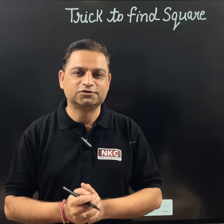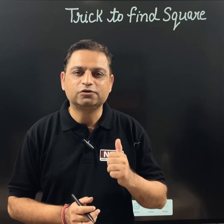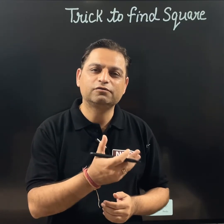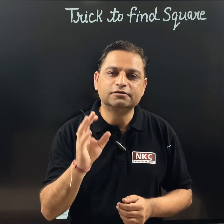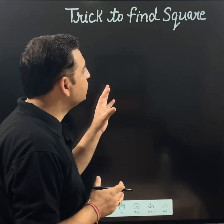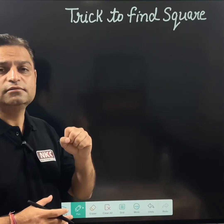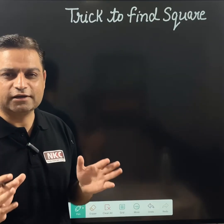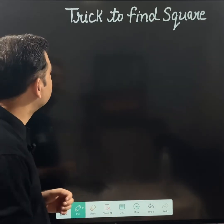Hello friends, welcome to Nandakishore classes. Today we are going to learn a shortcut trick to find the square of a number ending with digit 5. A number ending with digit 5 — its square is very easy to find. Without doing any calculation we can do it. Let's have a look.